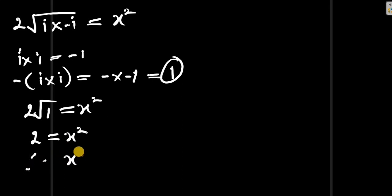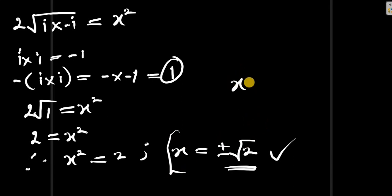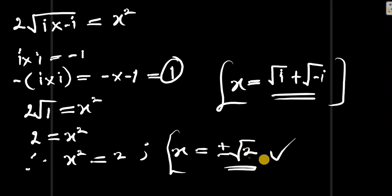Rearranging, x² = 2, so x = ±√2. Recall that x = √i + √(-i), so therefore √i + √(-i) = ±√2. That is the first method. Now let's use another method to solve this problem.